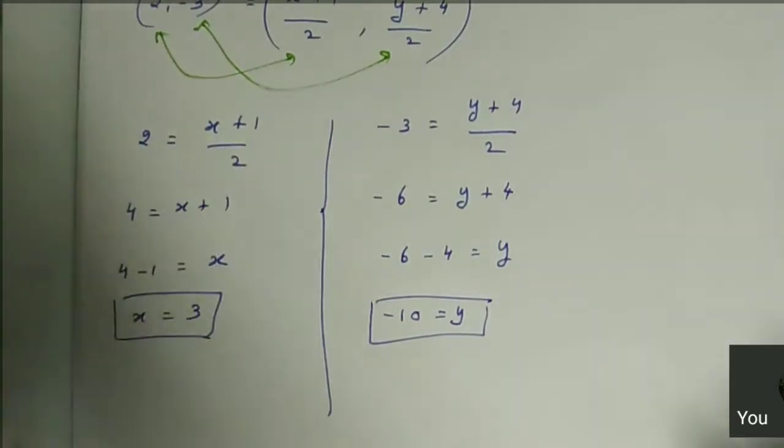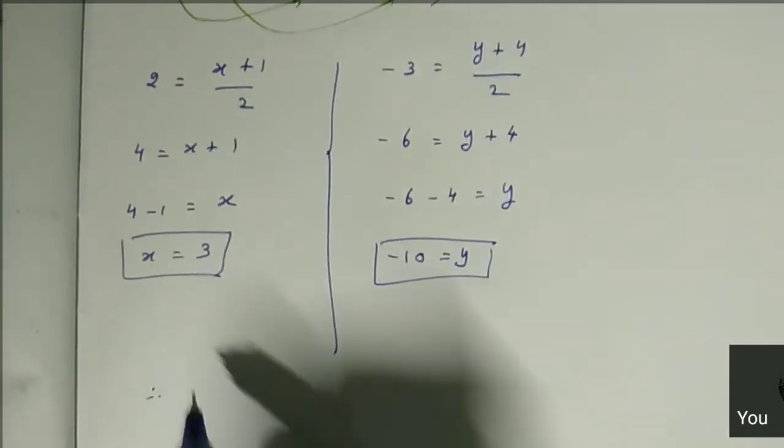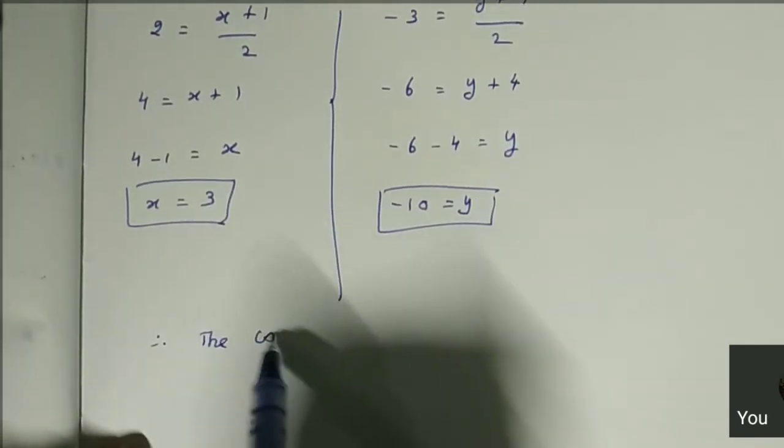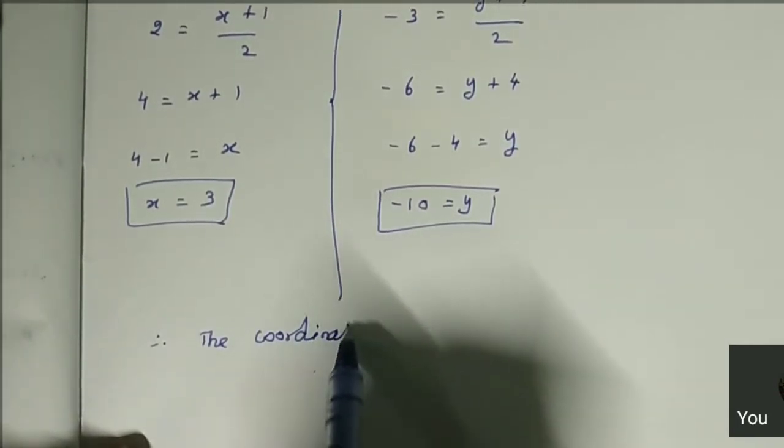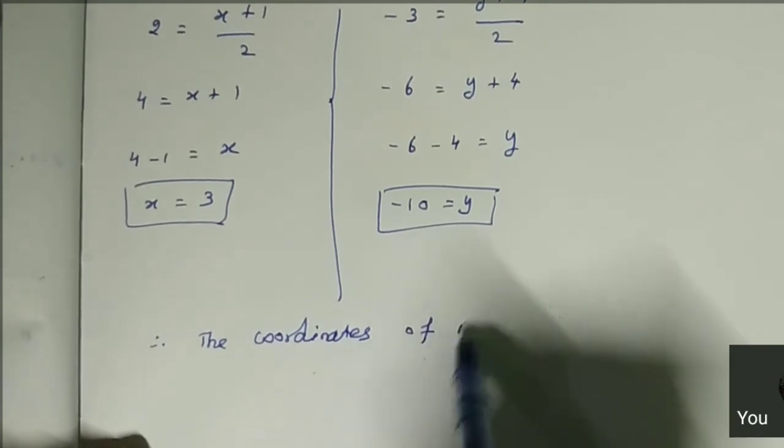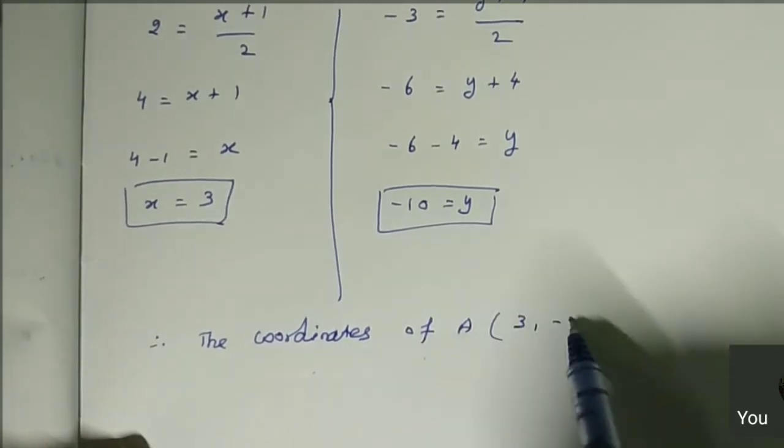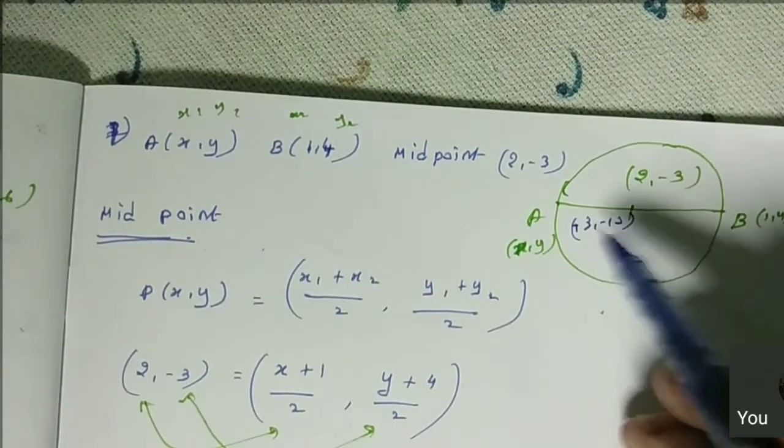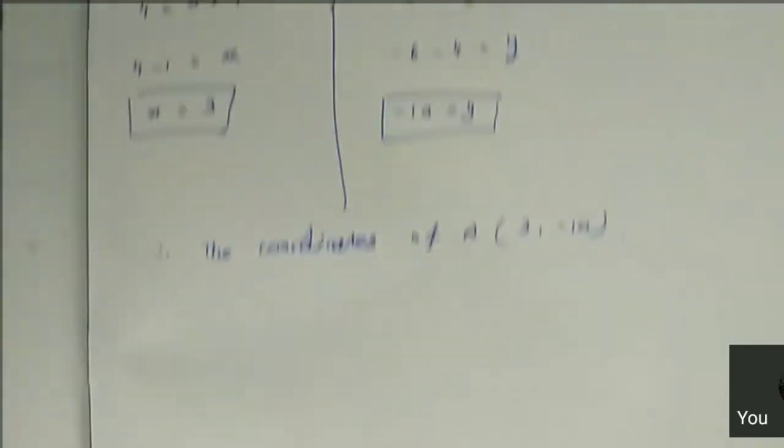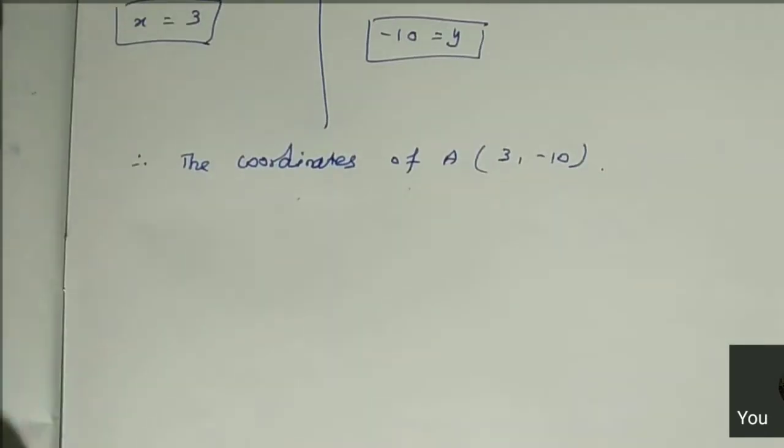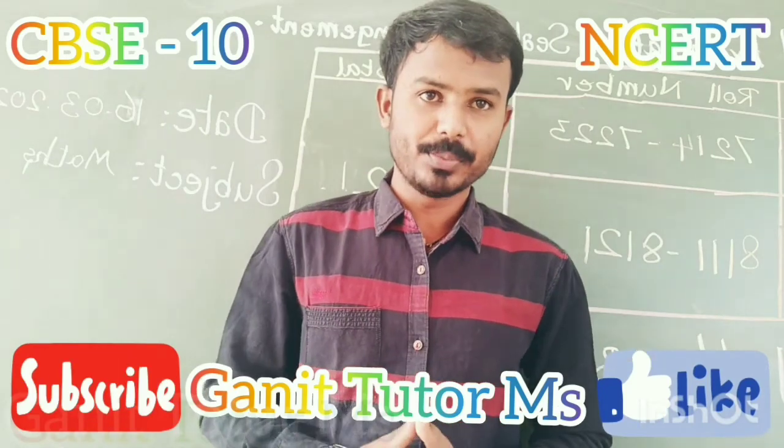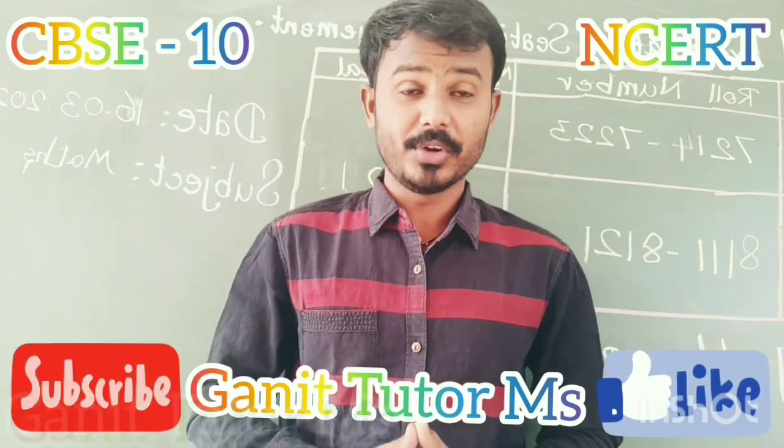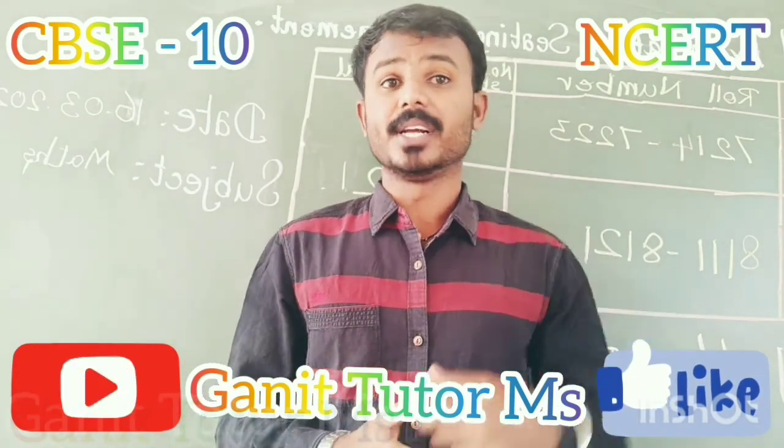Therefore, the coordinates of A are (3, -10). So now we found that it is (3, -10). If you have any doubt, you can ask me in a comment. Thank you.